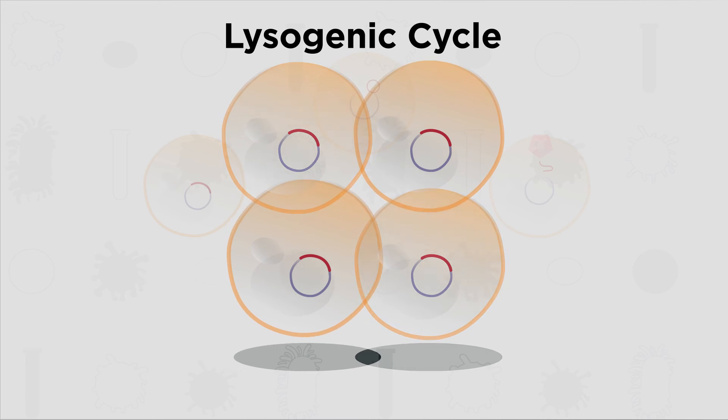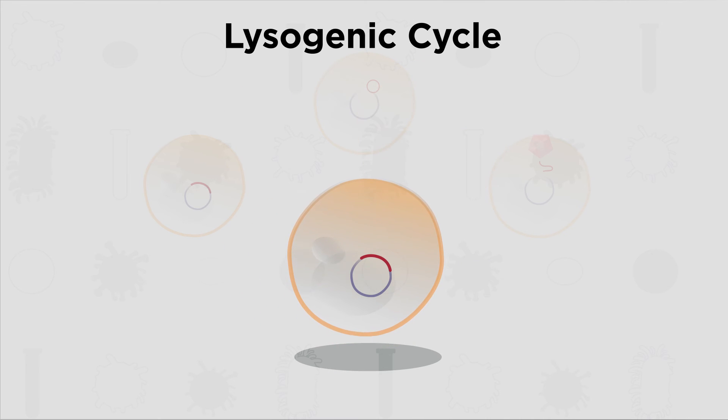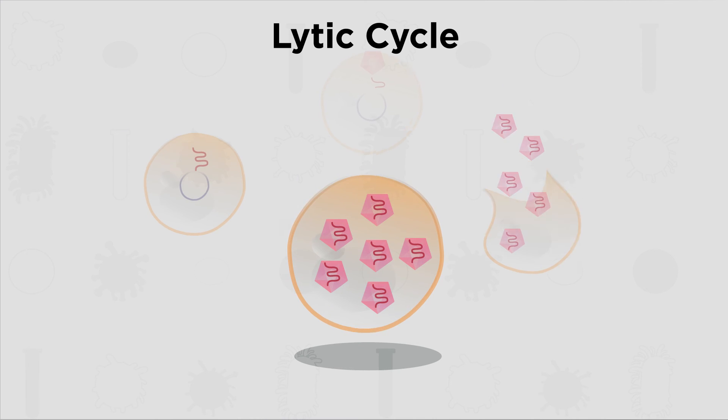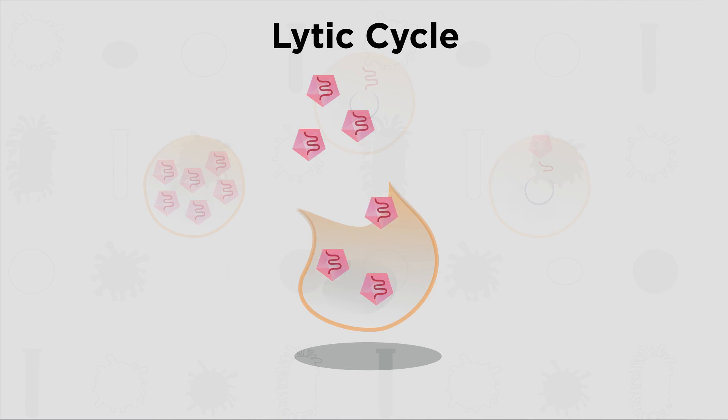The virus stays dormant until something happens that weakens the virus repressor gene. The host's genetic material then realizes something is up and tries to repair itself. It cuts out the error, which is actually the virus. The virus is then released and starts replicating following the lytic cycle. The cell bursts and the virus spreads to other host cells.